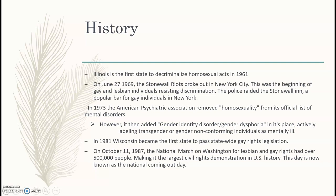In 1973, the American Psychiatric Association removed homosexuality from its official list of mental disorders. However, it then added gender identity disorder, or gender dysphoria, in its place, actively labeling transgender or non-gender-conforming individuals as mentally ill. In 1981, Wisconsin became the first state to pass statewide gay rights legislation.